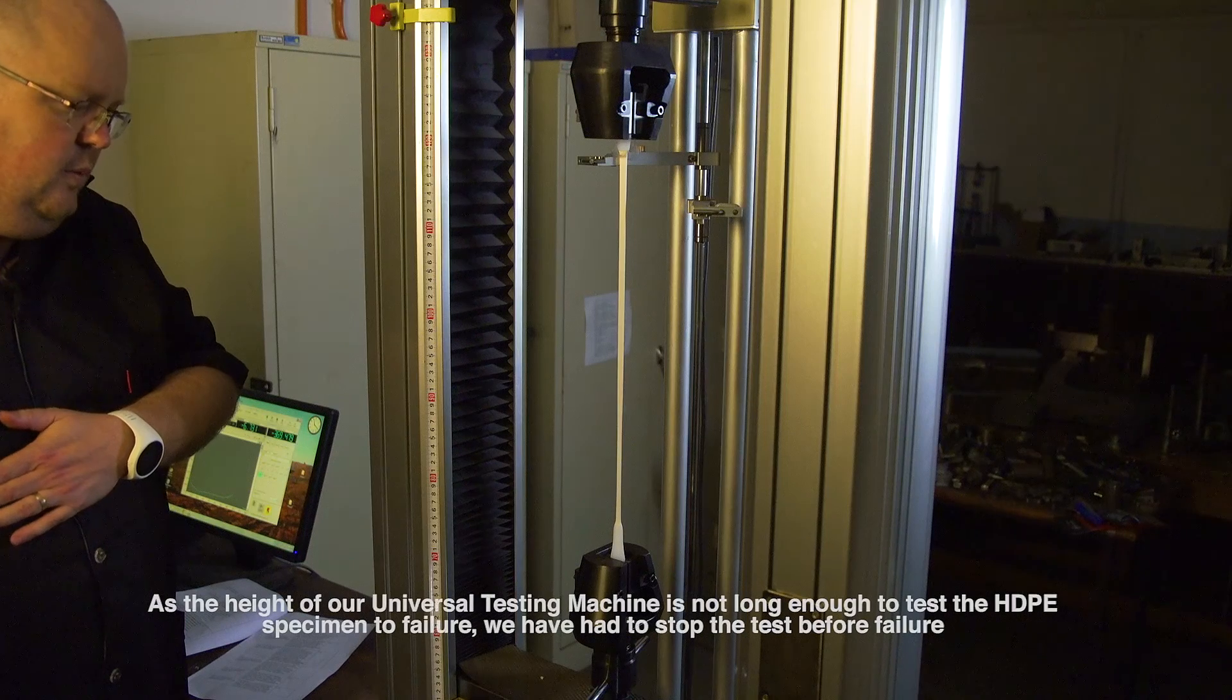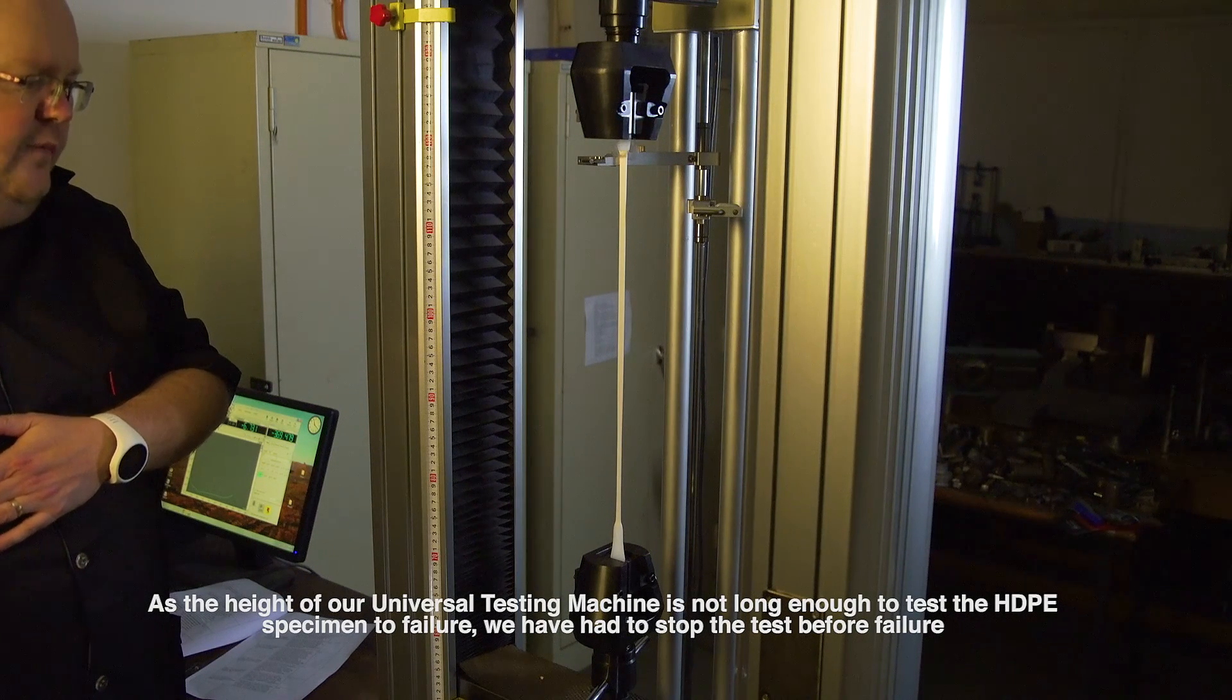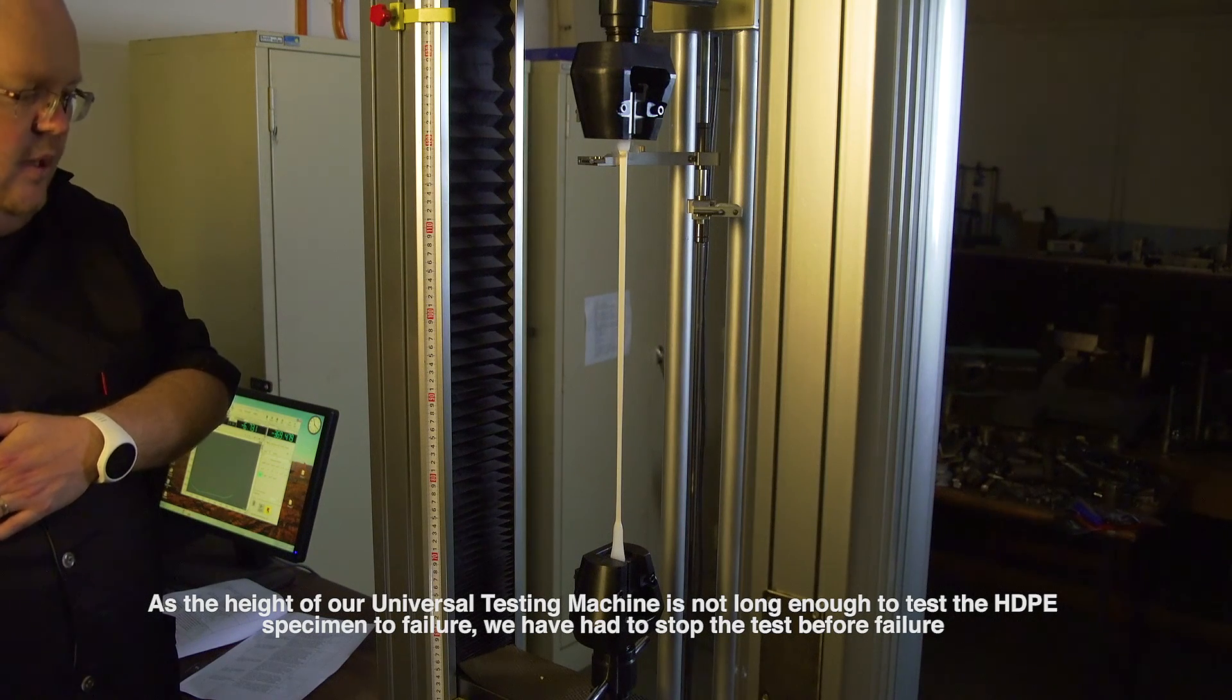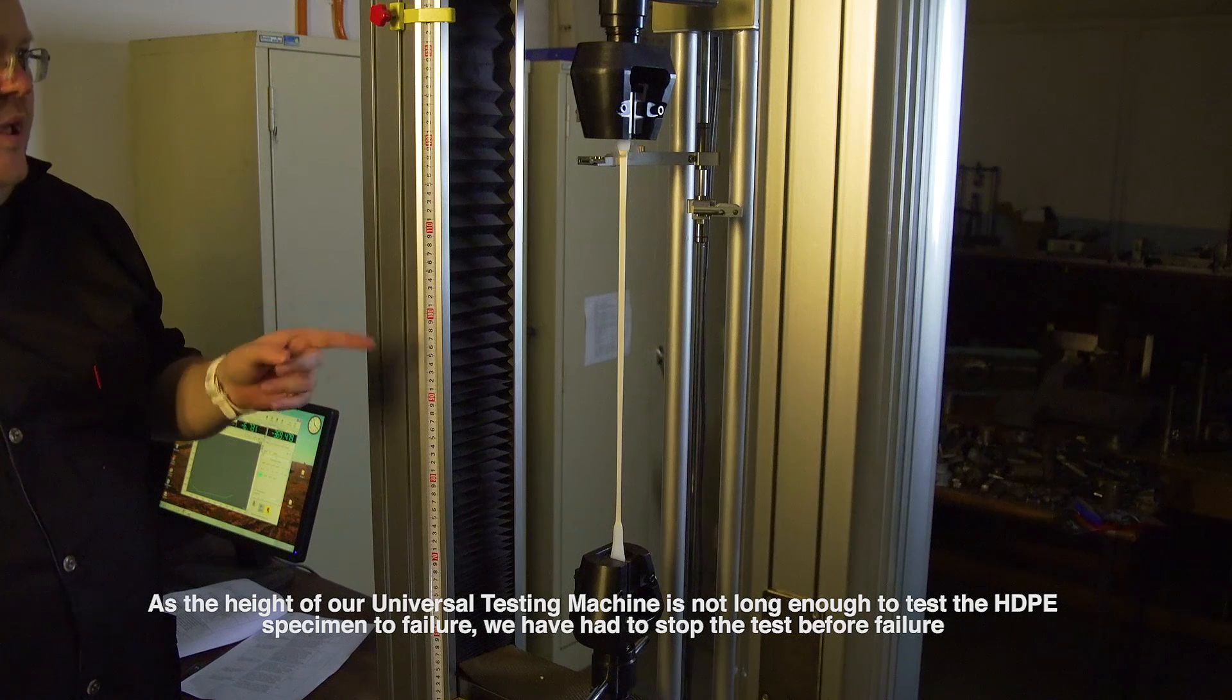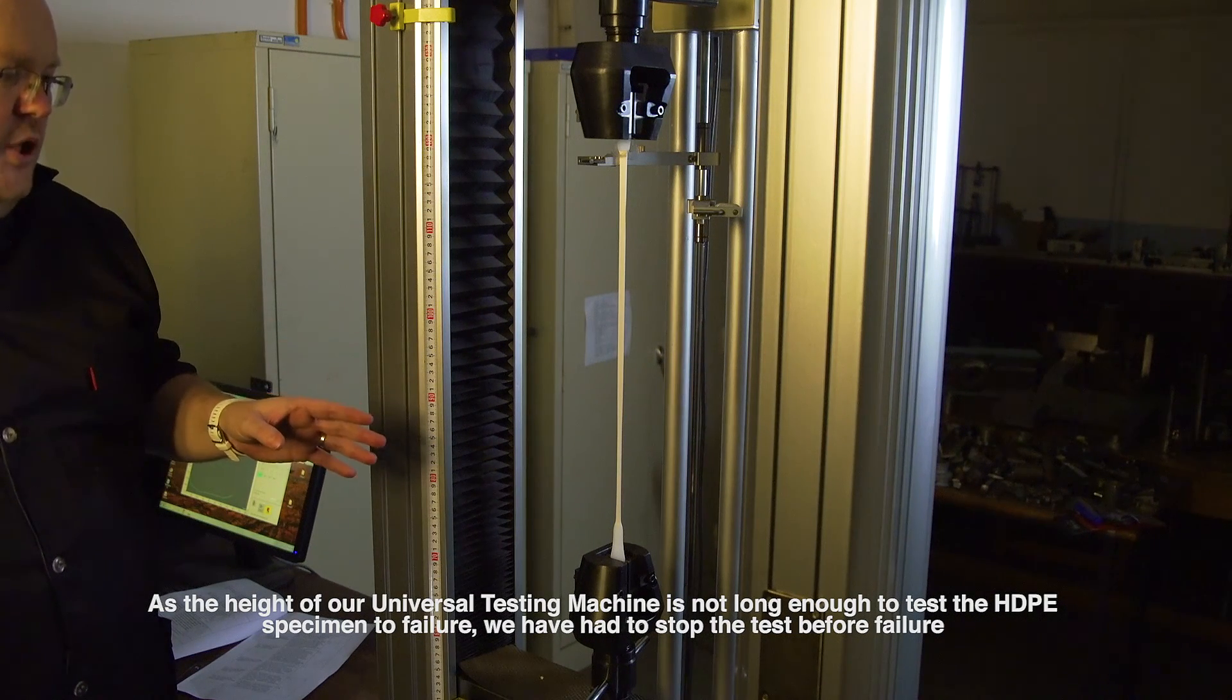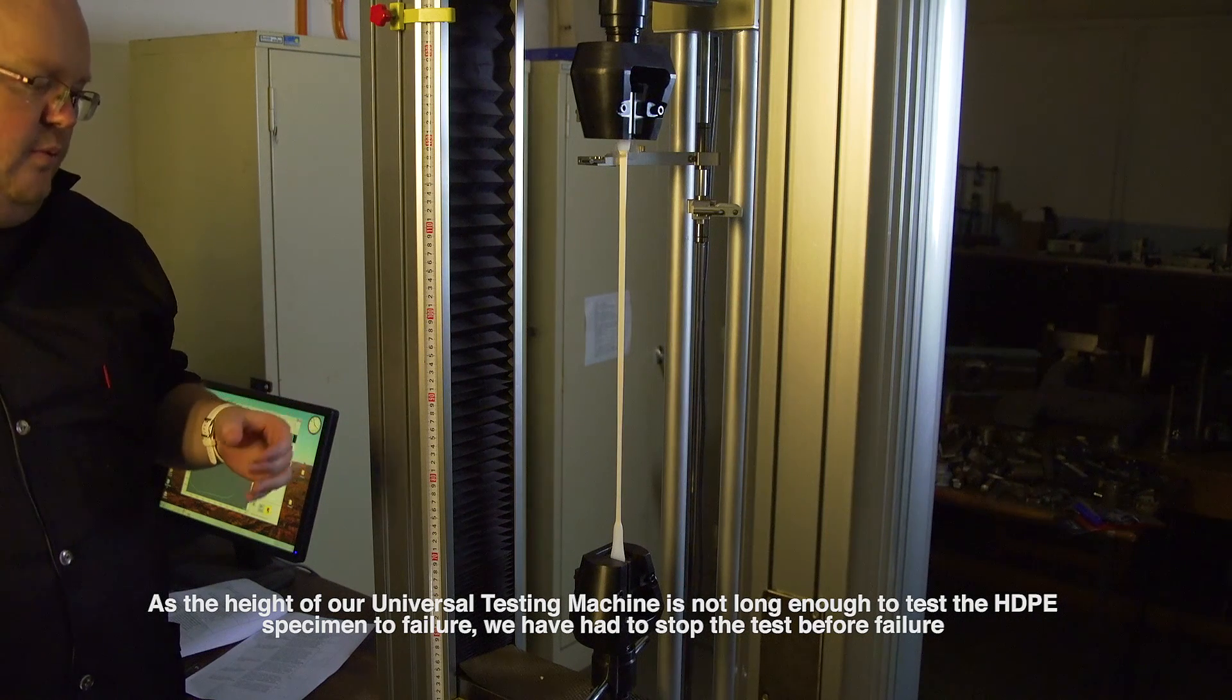All right, so we have spoken in class about the fact that the total deformation of a sample before failure is the sum of the elastic and the plastic deformation. As you can see now, this HDPE sample hasn't actually failed, but this is a good way for me to show you the spring back due to the elastic recovery of the sample when I release the grips.